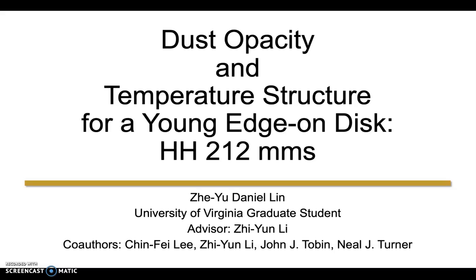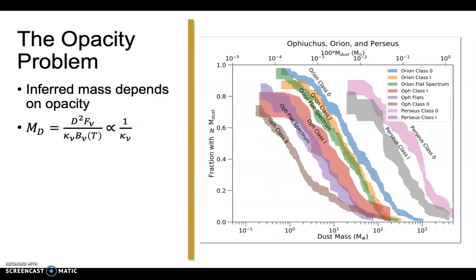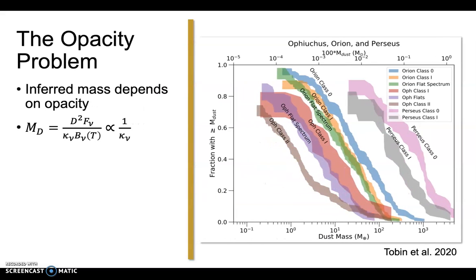When observing the thermal emission of dust in the millimeter regime, the conversion of the integrated observed flux to the total mass depends on the dust opacity. For example, through this relation here, where M is the disk mass, and kappa is the dust opacity.